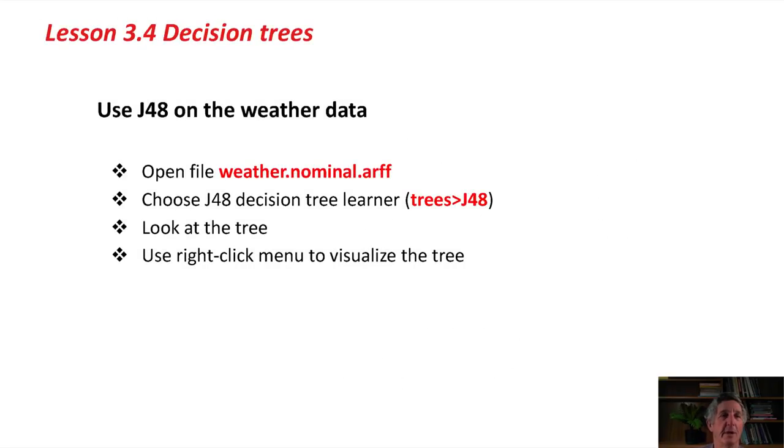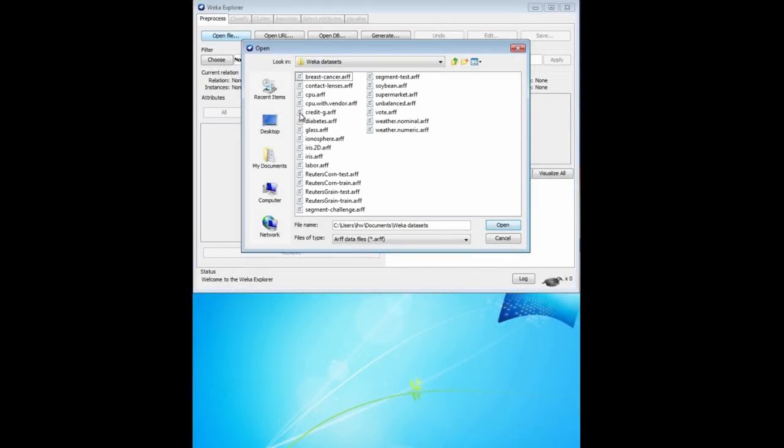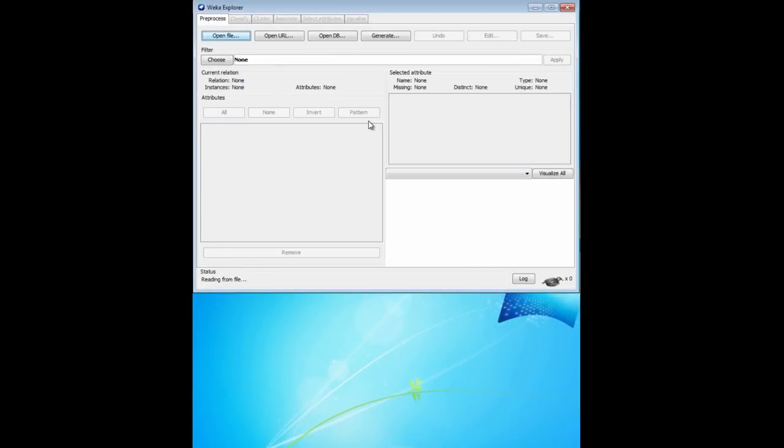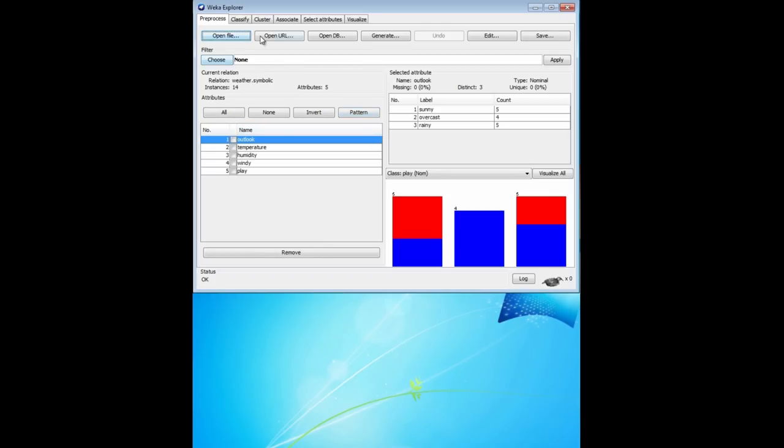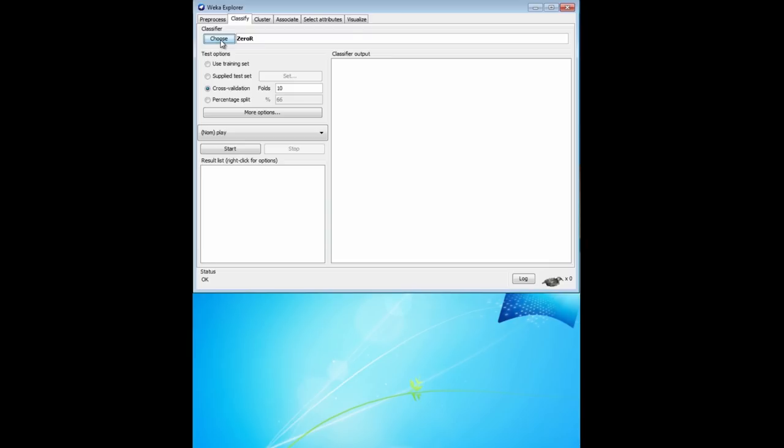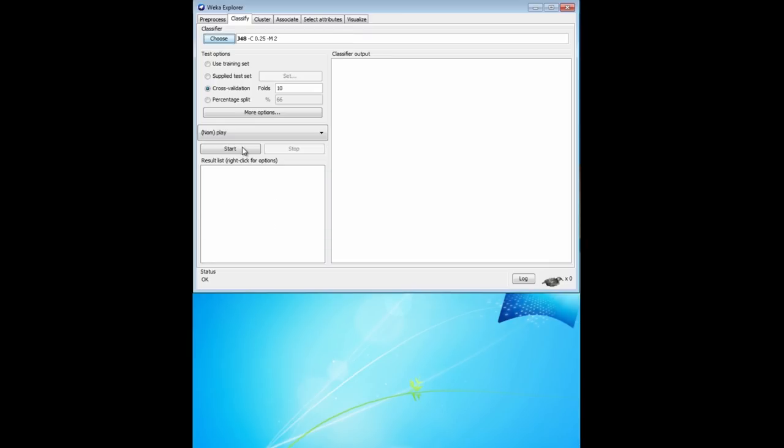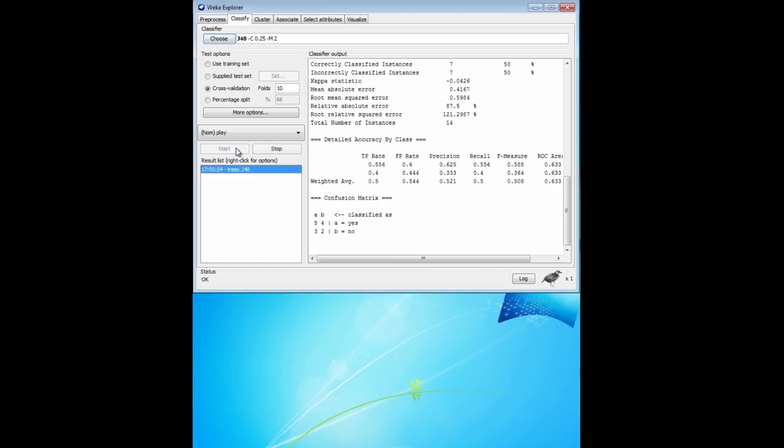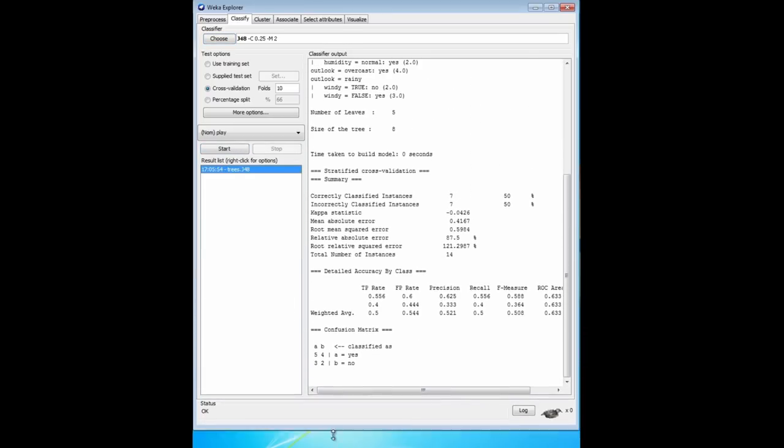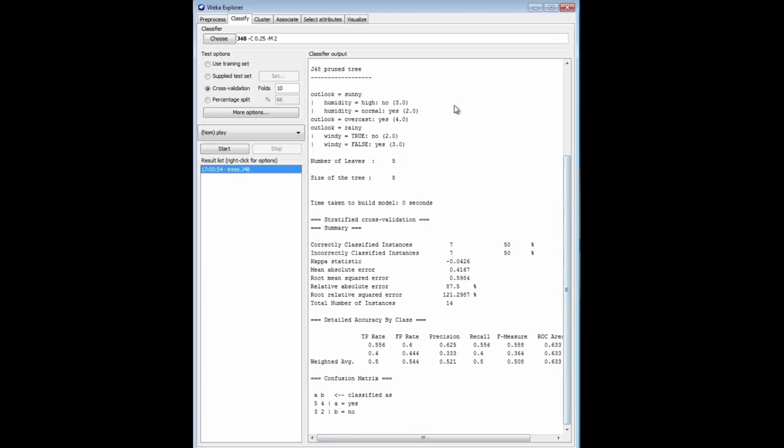Let's open up Weka, and just do this with the nominal weather data. Of course, we've done this before, but I'll just do it again. It won't take long. J48 is kind of the workhorse data mining algorithm. There's the data. We're going to choose J48. It's a tree classifier. There we go, and we're going to run this, and we get a tree, the very tree I showed you before.